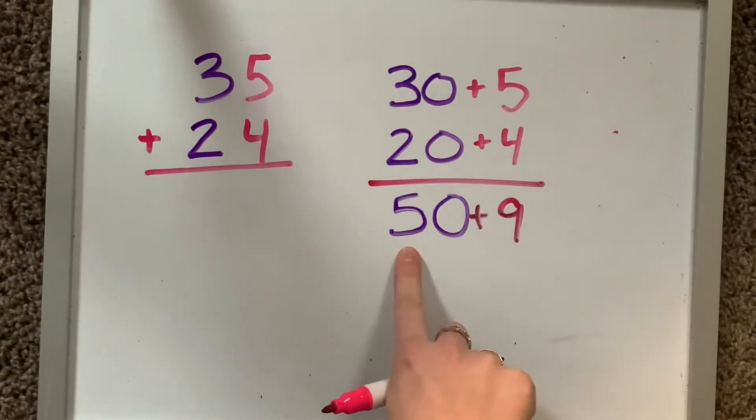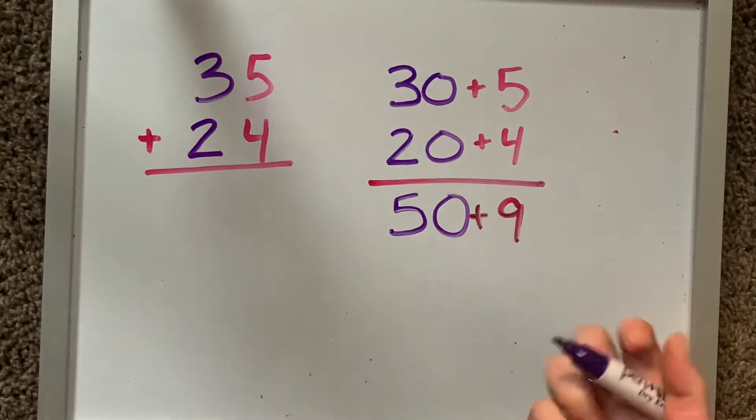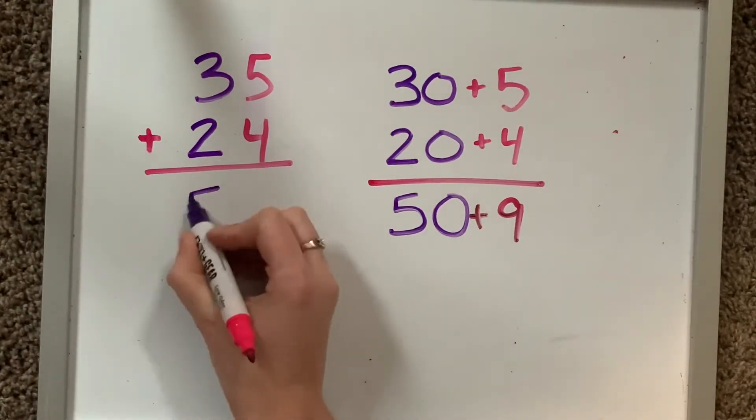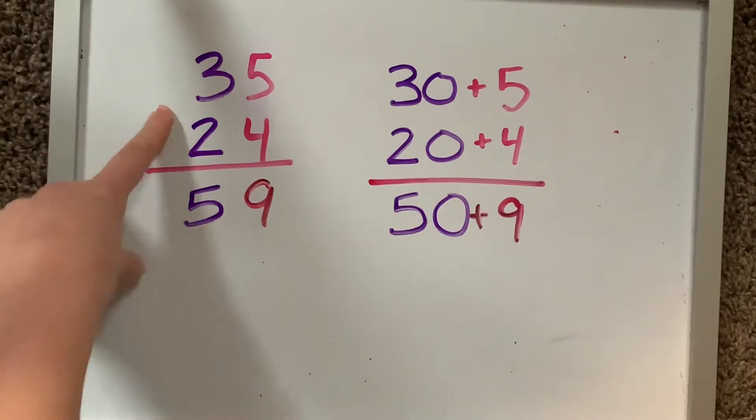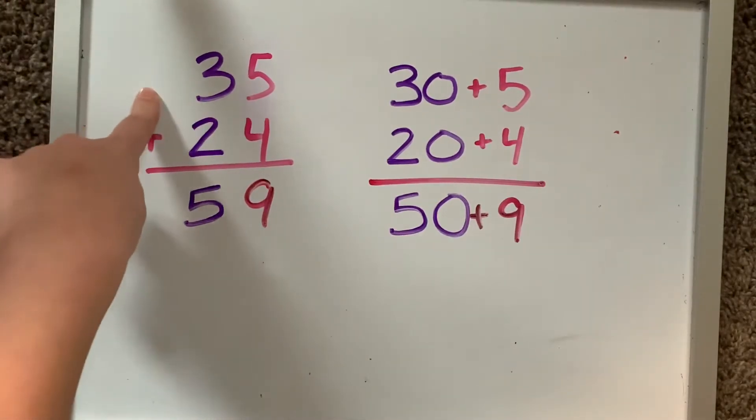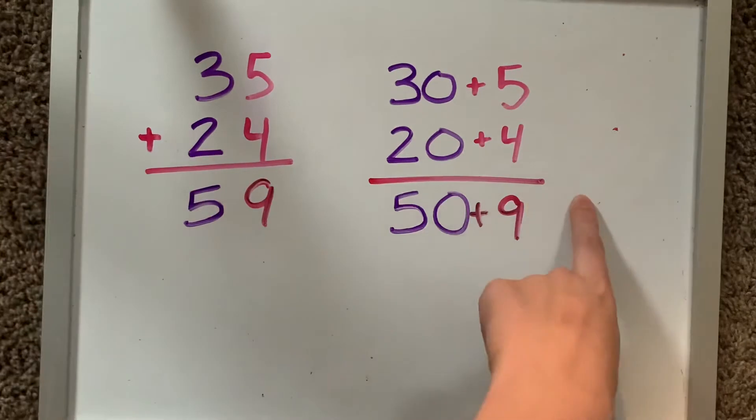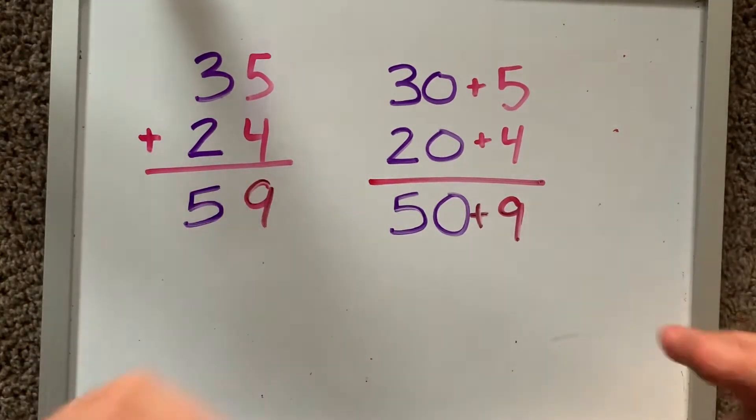Oh, well, this is in the expanded form. We just now need to put this back into standard form. 50 plus 9. 59. Hey, whoa, we just solved this problem using expanded form. That's crazy. Let's clear this off. And let's do another one together to see if it's going to work again.